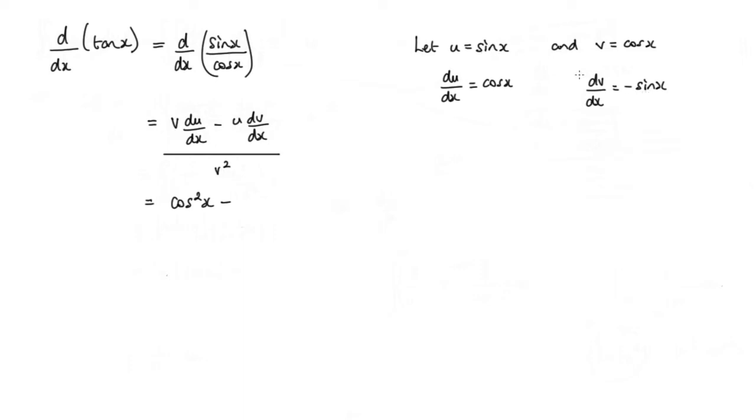And u dv dx I'm going to get another negative, so that will make that into a positive. And I'll have sin squared x, and that's all over v squared, which would be cos squared x.